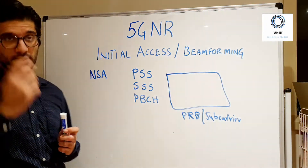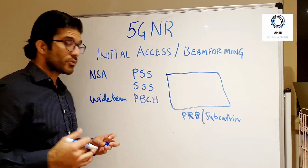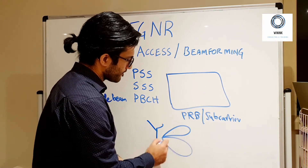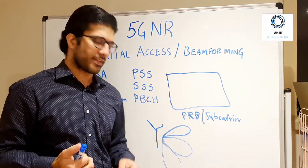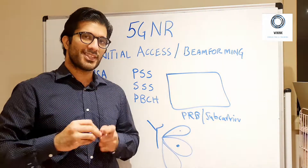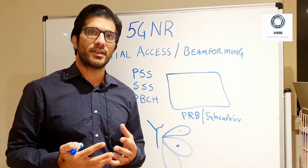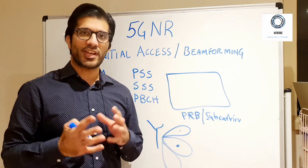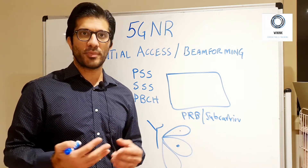Now we will go through the concept of beamforming in 5G NR. In terms of accessing the network, if this is your transmitter, there will be multiple beams. With time, the cell will first transmit one beam, then sweep to the next beam, and then to the next — covering the whole cell radius. It is not sweeping like a radar; rather, it is transferring the radiation pattern from one location to another over time.